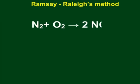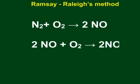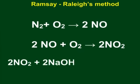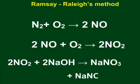N2 plus O2 gives 2NO. 2NO plus O2 gives 2NO2. 2NO2 plus 2NaOH gives NaNO3 plus NaNO2 plus H2O.